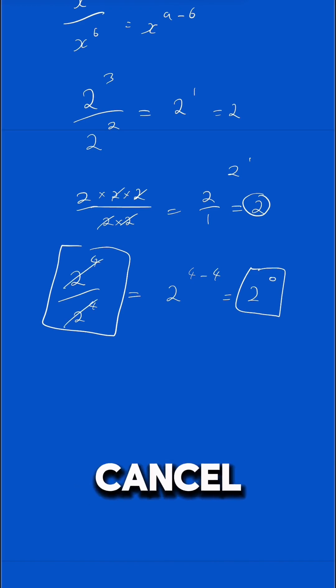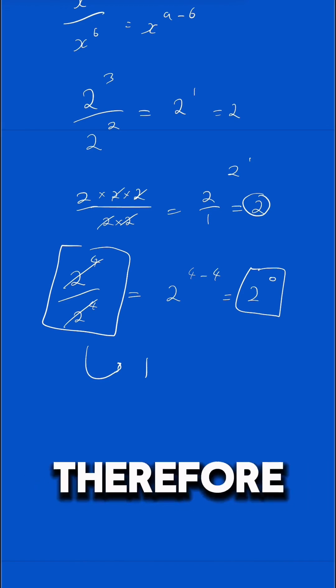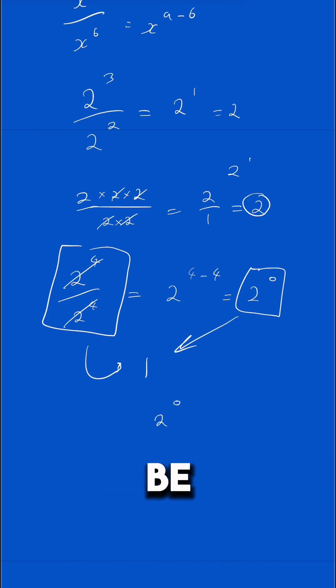well, this would cancel out. And the same on the bottom, the same on the top is going to leave you with 1. Anything divided by itself is 1. Therefore, this would be 1.